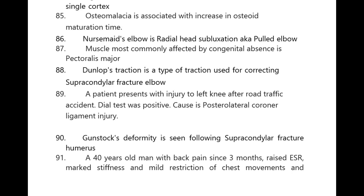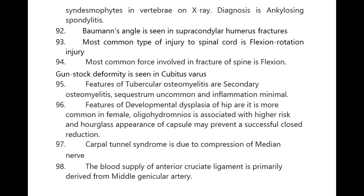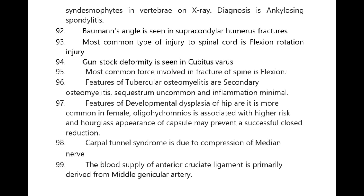A 40-year-old man with back pain for 3 months, raised ESR, morning stiffness, mild restriction of chest movements, and syndesmophytes in vertebra on X-ray — diagnosis is ankylosing spondylitis. Baumann's angle is seen in supracondylar fracture of the humerus. Most common type of injury to the spinal cord is flexion-rotation injury. Most common force involved in fracture of the spine is flexion. Gunstock deformity is seen in cubitus varus.